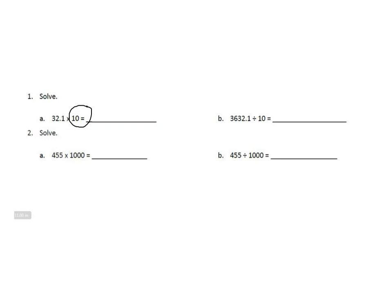If we were to think about 32 and 1 tenth on a place value chart, it would look like this. 3 is in the tens place. We have 2 in the ones place. We have our decimal. Then we have our 1 that's in the tenths place.